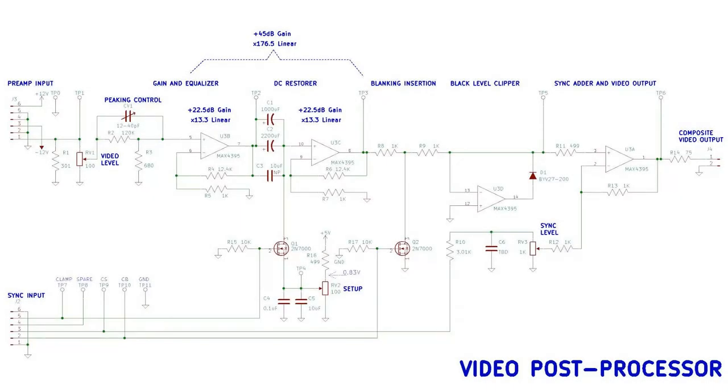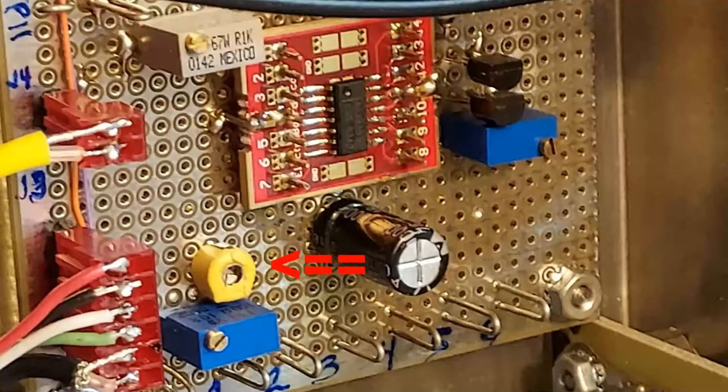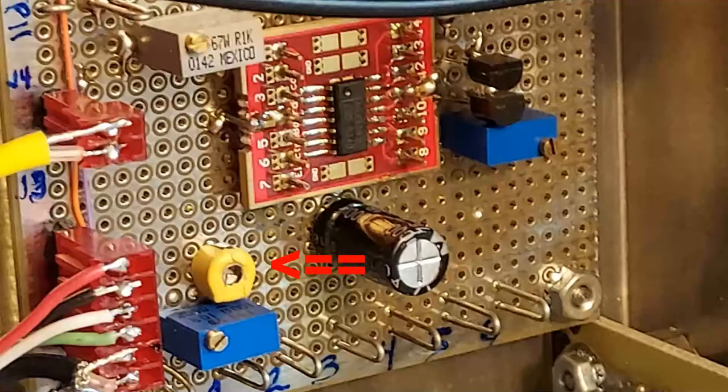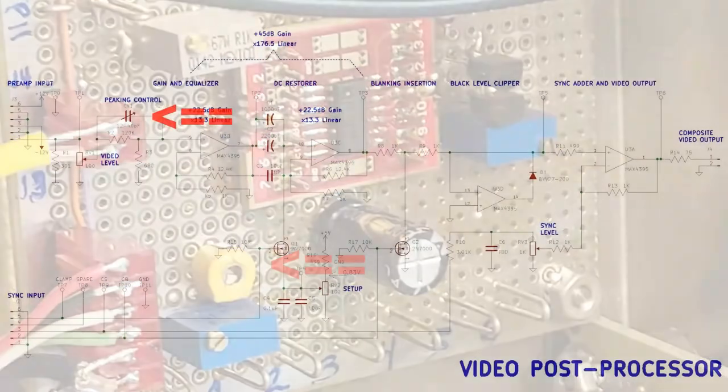So without further ado, let's get on with it. If you recall, in the last video I replaced the peaking control capacitor CV1 with the small yellow unit which has a value of 12 to 40 picofarads.